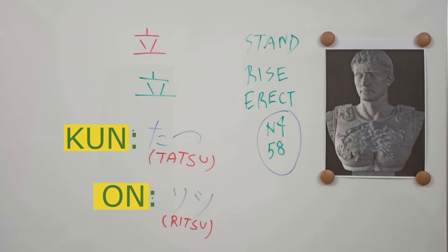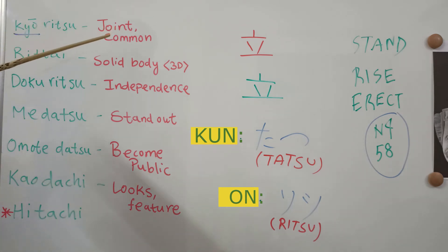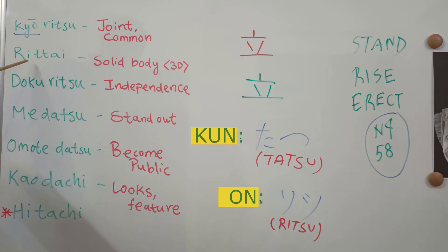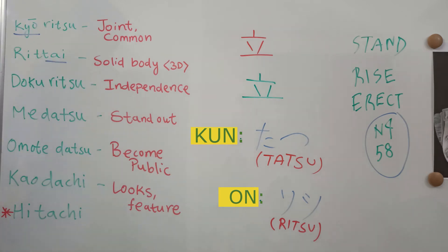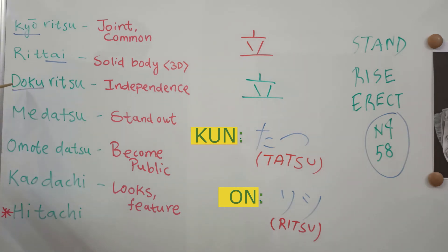Next we will cover some common words associated with this kanji. Kyōritsu — here kyō means common, so kyōritsu means joint or common standing, i.e., cooperation. Rittai — ritsu plus tai, where tai means body, so standing body gives the meaning of a solid body or 3D structure. Dokuritsu — doku means alone or single, so dokuritsu means standing for yourself, i.e., being independent.